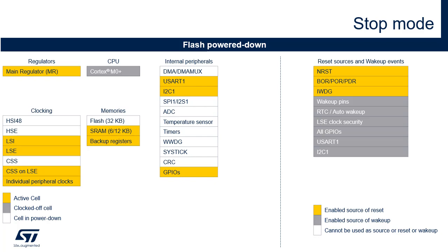All clocks in the VCore domain are stopped. The HSI48 and HAC oscillators are disabled. The RTC, clocked by the internal or external low-speed oscillator, remains active. The brown-out reset is always enabled. Most peripheral clocks are gated off. Several peripherals can be functional in stop mode: USART1 and 2, I2C1, and the independent watchdog. The events from all IOs can wake up from stop mode, as well as the interrupts generated by the active peripherals.